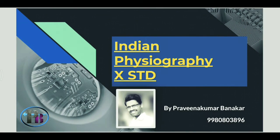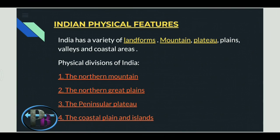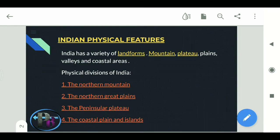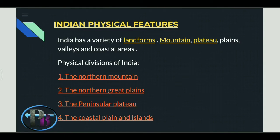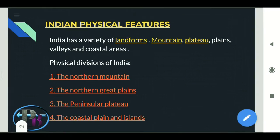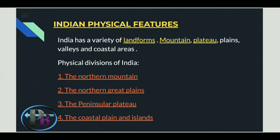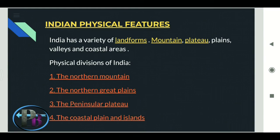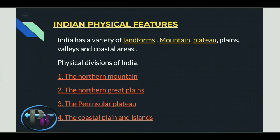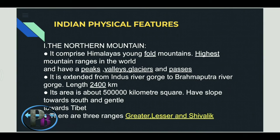In this video we are going to discuss Indian Physiography Geography, the second lesson. In this lesson on Indian physical features, India has many different land features like mountains, plateaus, landforms, plains, valleys, coastal areas, and many more. Geographers have categorized four types of physical features: the Northern Mountains, Northern Great Plain, the Peninsular Plateau, coastal plains, and islands.